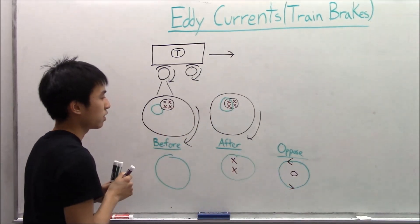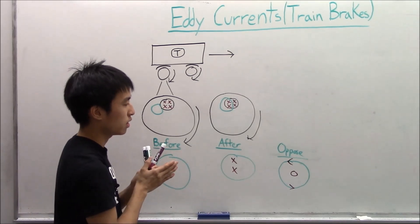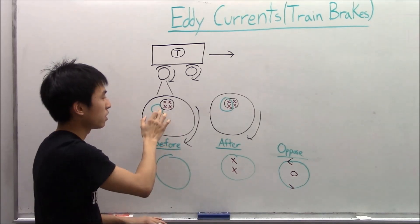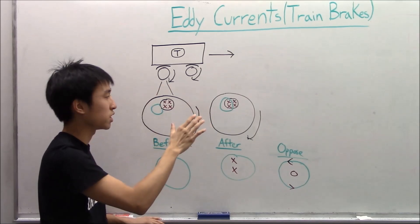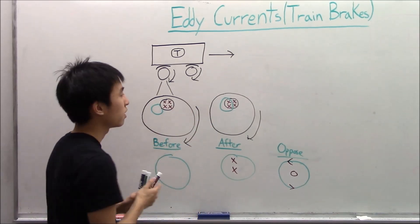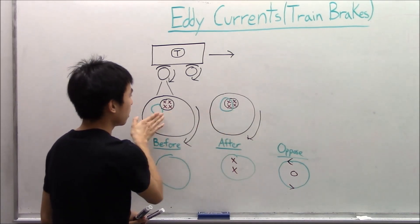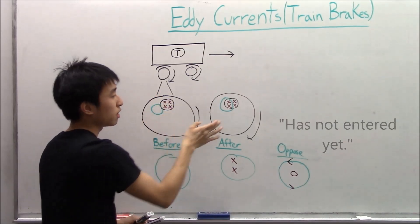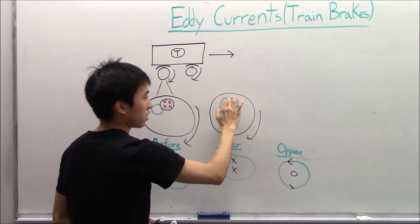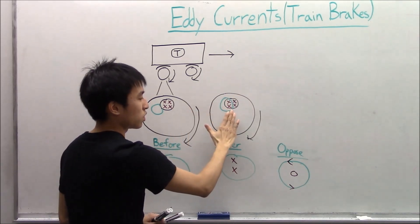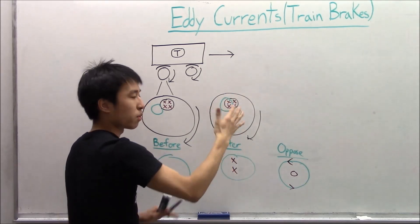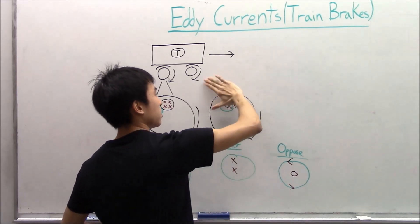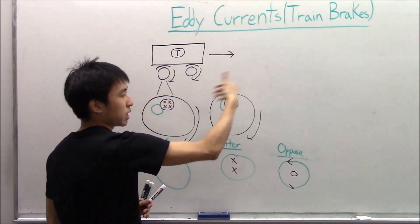Now that you know the induced current is going counterclockwise, you do your right-hand rule analysis for this part of the wheel as it enters the magnetic field region and find the force generated by this induced current. The current is going counterclockwise, so at the portion that has entered the field: your current is going this way, the field lines are going into the board, so your palm is pointing down, and your thumb gives the force. At different points of the wheel, there are different forces generated, but they're all pointing in essentially the same direction.